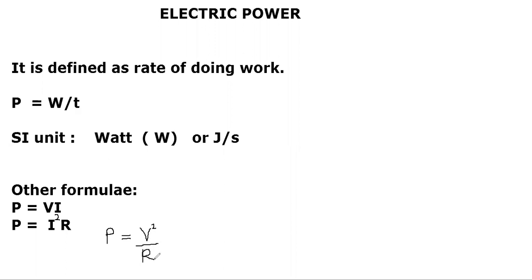Electric power is defined as the rate of doing work. The basic formula is W/T and the SI unit is Watt. The other formulas are VI, I²R, and V²/R. I²R comes from substituting V = IR into VI, and V²/R comes from substituting I = V/R. These four formulas are what you need to remember while solving numericals related to electric power.